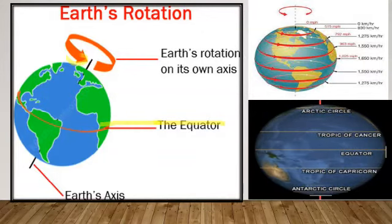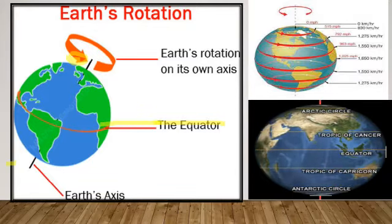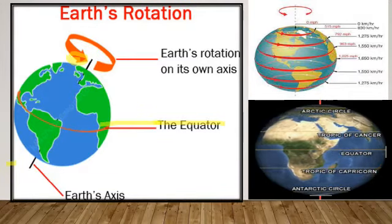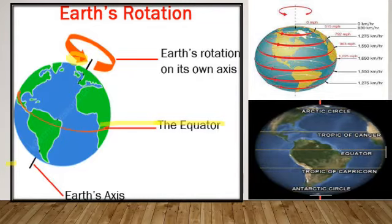The north pole and the south pole are actually points. So the speed of rotation at the poles is zero.